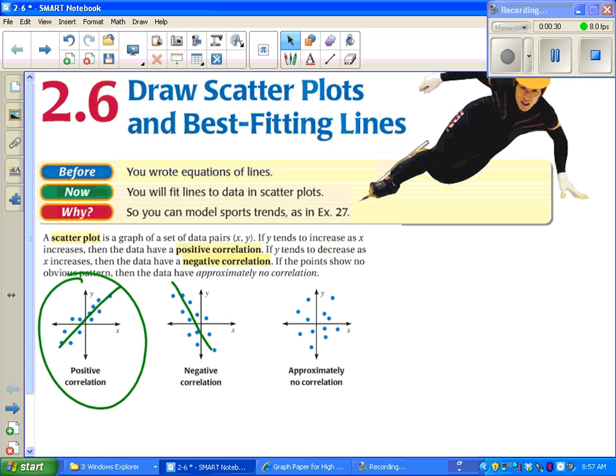It looks like the dots are kind of going downhill. You can call that a negative correlation. And you can't really see a pattern at all. It's getting no correlation. I can't tell if it looks like those dots are going uphill, downhill, or what.